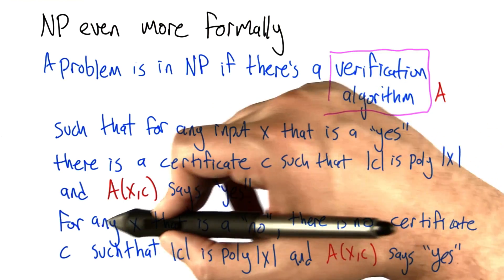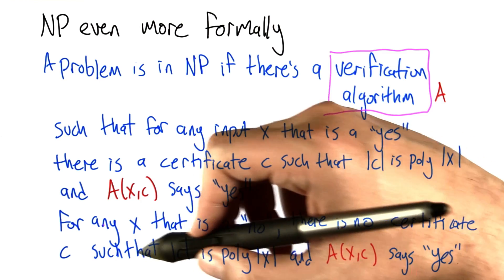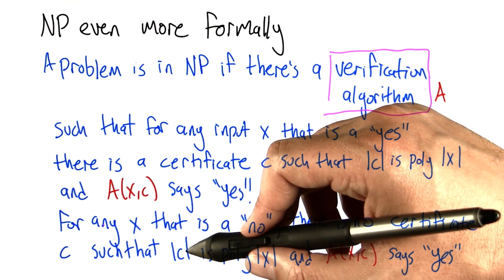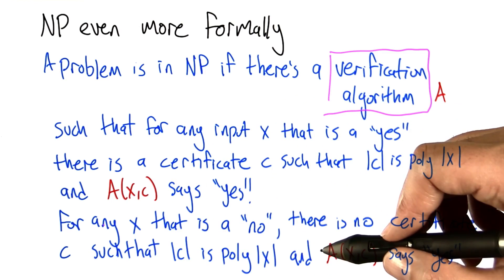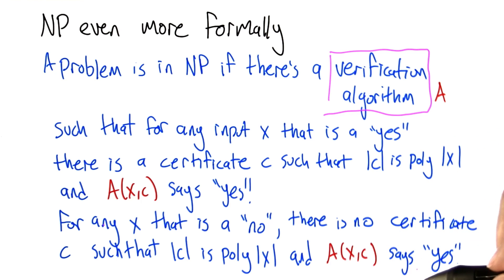But for any X that is a no, there is no certificate C that's polynomially sized with respect to X and the verification algorithm says yes.